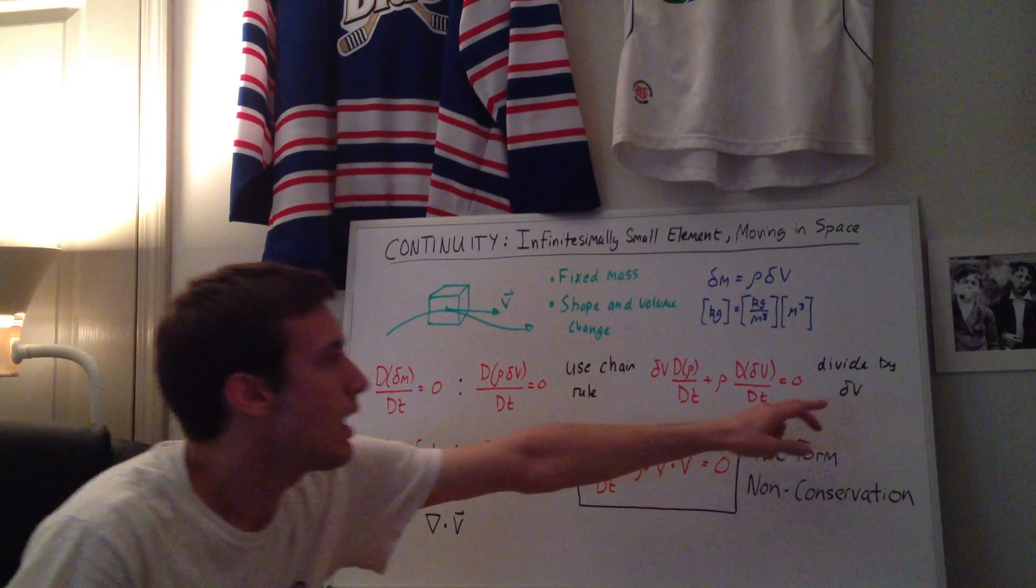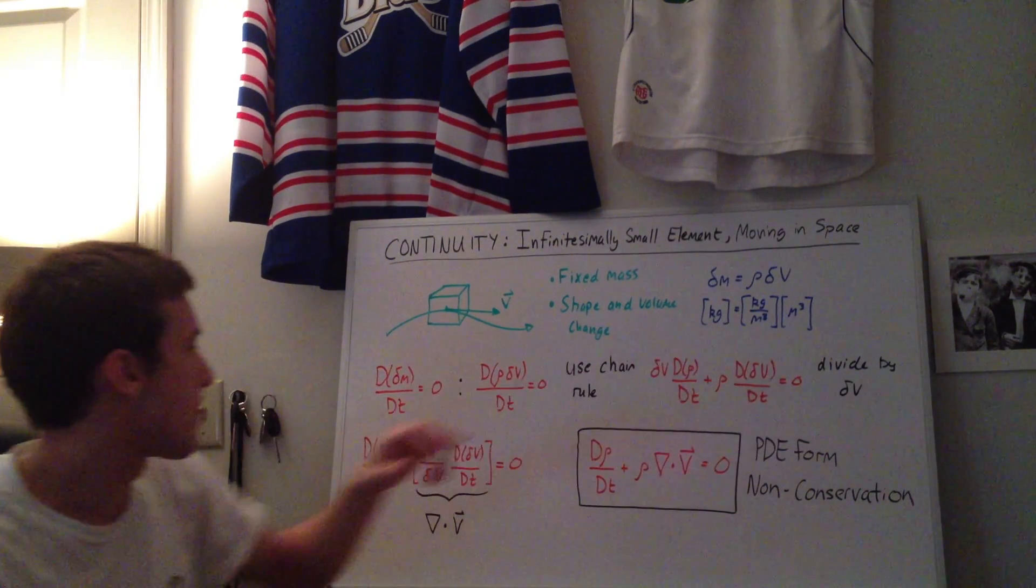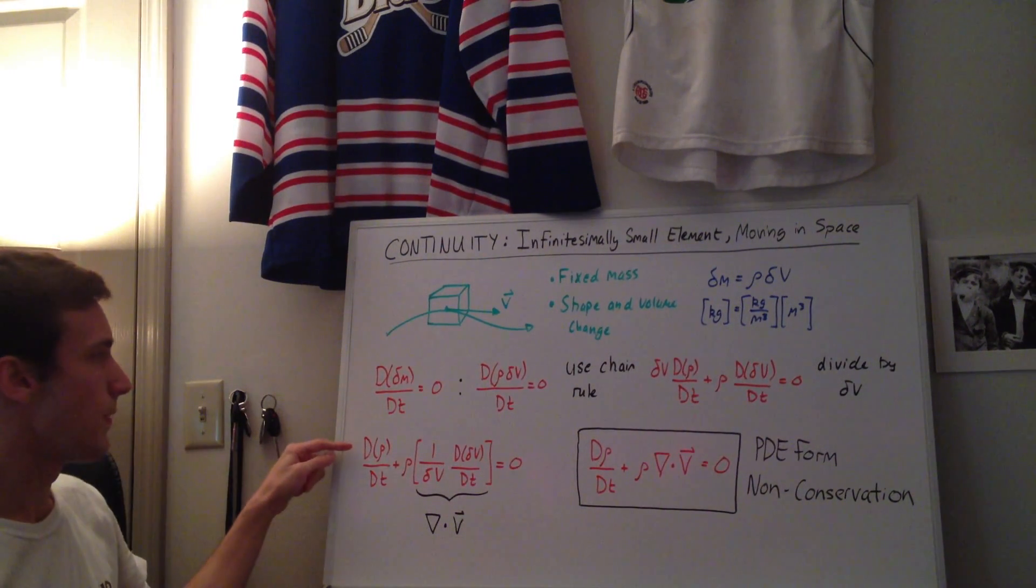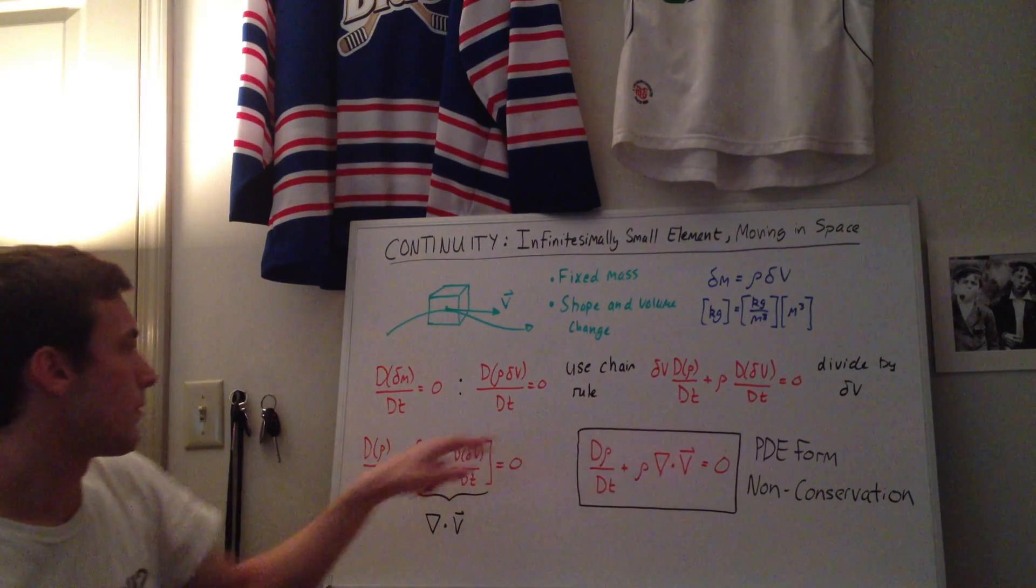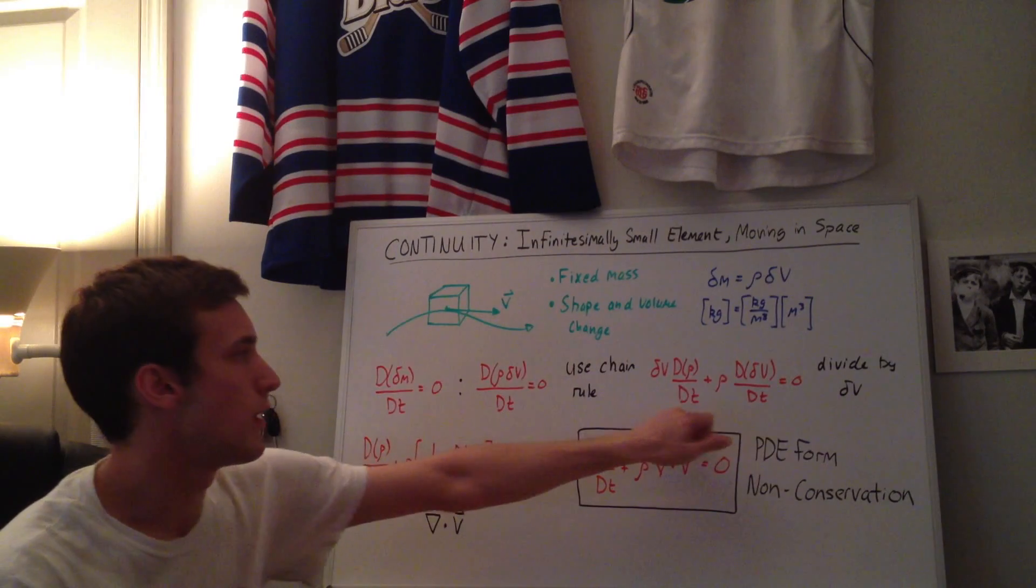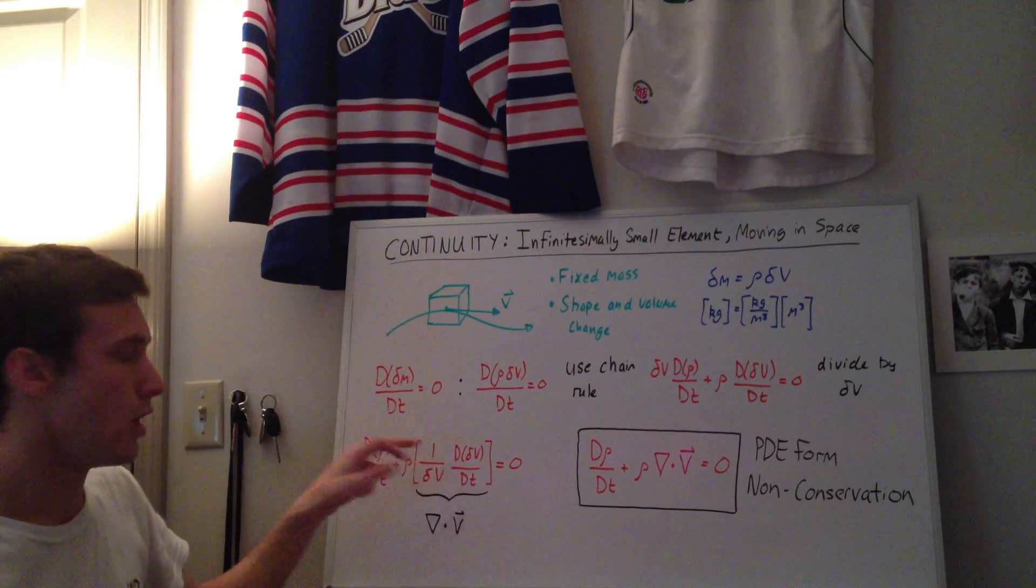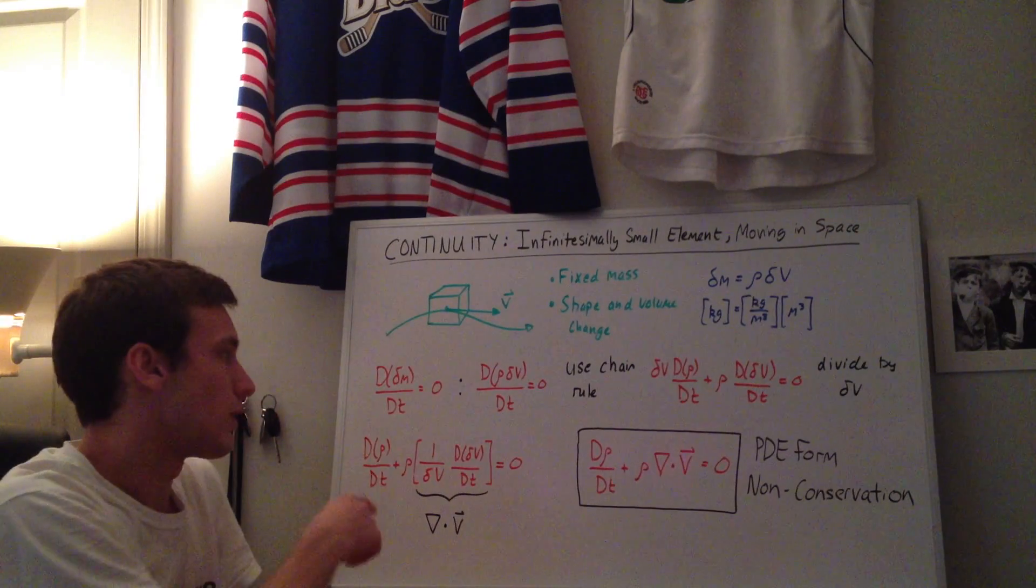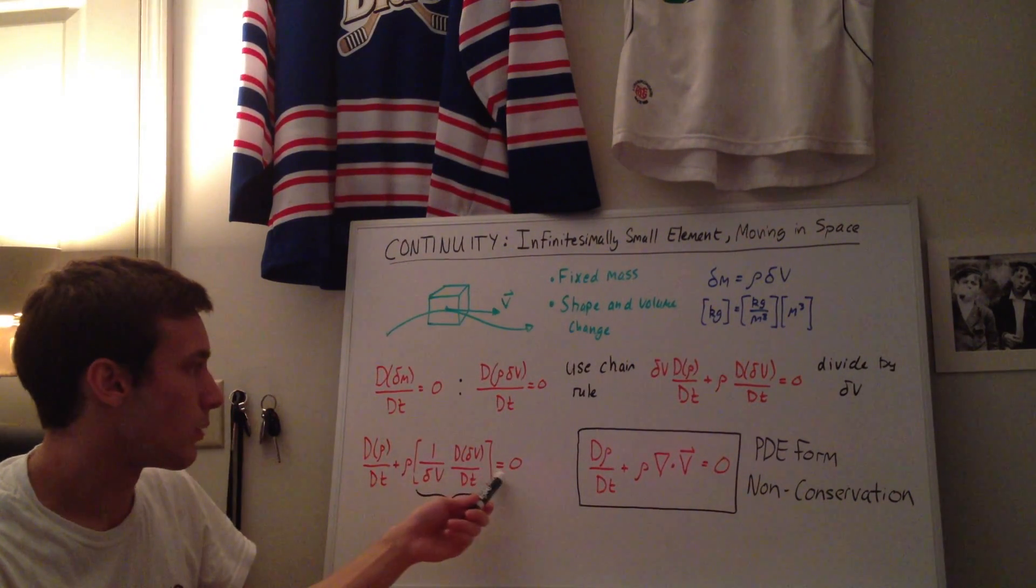Then we want to divide by dv, so we'll divide by dv here, divide by dv here, and on the right-hand side as well, and we end up with this equation here. So we just have the rho dt here, and then we have rho on this side, and divide it through by the volume, and we have this one over dv times the total derivative of the volume with time, and that's equal to zero.